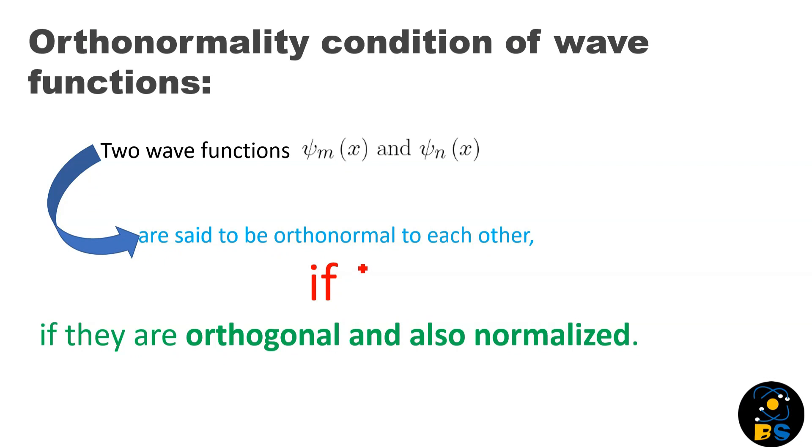Now let's understand orthonormality. Two wave functions ψ_m and ψ_n are said to be orthonormal to each other if they are orthogonal and also normalized. It is nothing but the combination of orthogonality plus normalization.